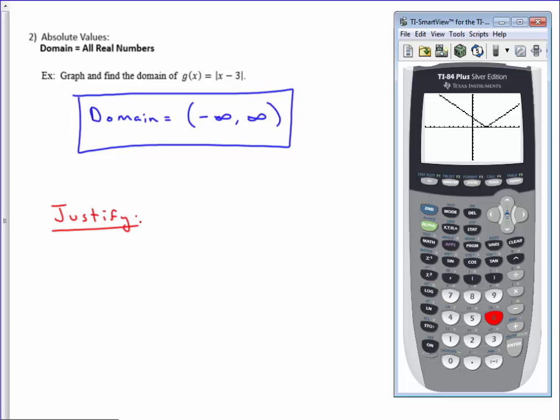The graph of an absolute value function is a V-shaped graph. In this case, it's a V-shaped graph intersecting the x-axis at x is 3. The general shape looks like this when I look at my calculator. And because my graph goes forever to the left and forever to the right, that's why my domain is negative infinity to infinity.